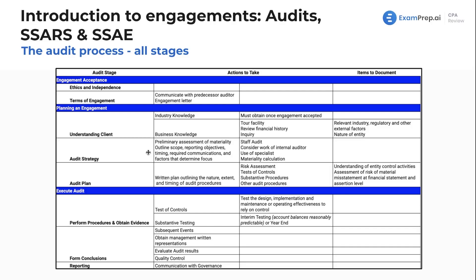We want to develop our audit strategy when planning the engagement. We want a preliminary assessment of materiality — what's important and what do we need to assess more? We can change materiality as we go throughout the audit. We want to outline the scope: what we're doing, what we're responsible for, our objectives, and the timing — just like any service-based engagement, you need to plan timing or it may never get done. We also need to address any required communications, as the AICPA specifies items that must be communicated to management or those charged with governance.